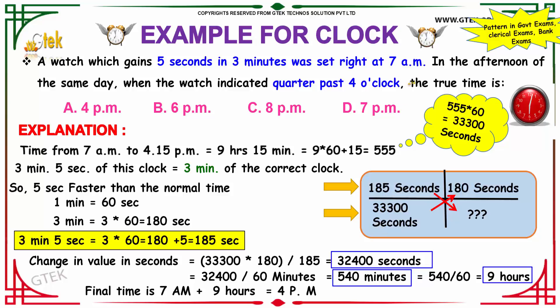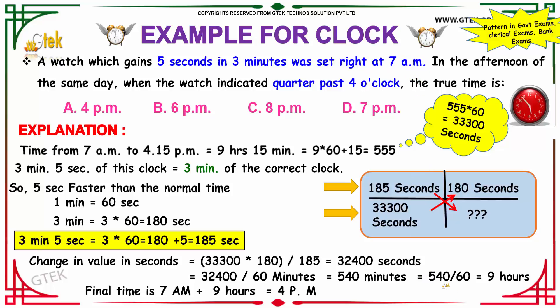The clock was set right at 7 a.m. So from 7 a.m., if it had been running correctly, it would have crossed 9 hours — that is, the clock would have shown 4 p.m., which is option A. So option A is our answer.